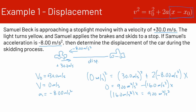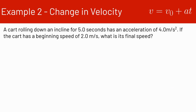Dividing both sides by 16 m/s², we get x equals 56.3 meters. So starting at 30 m/s and decelerating at 8 m/s each second, it takes 56 meters for the car to reach a stop.